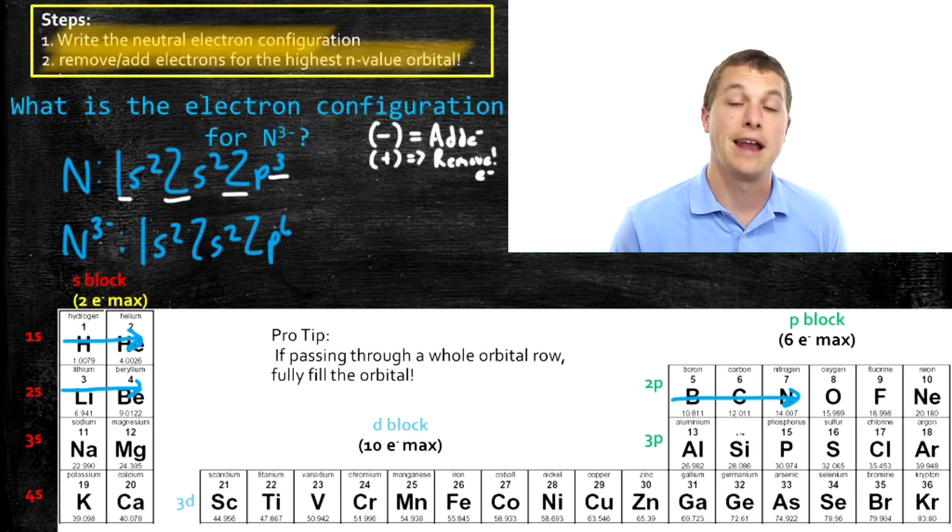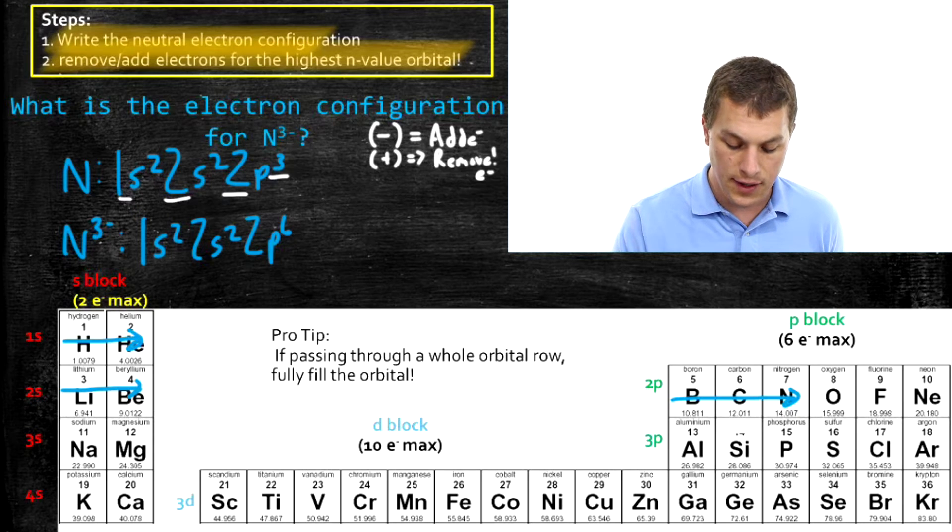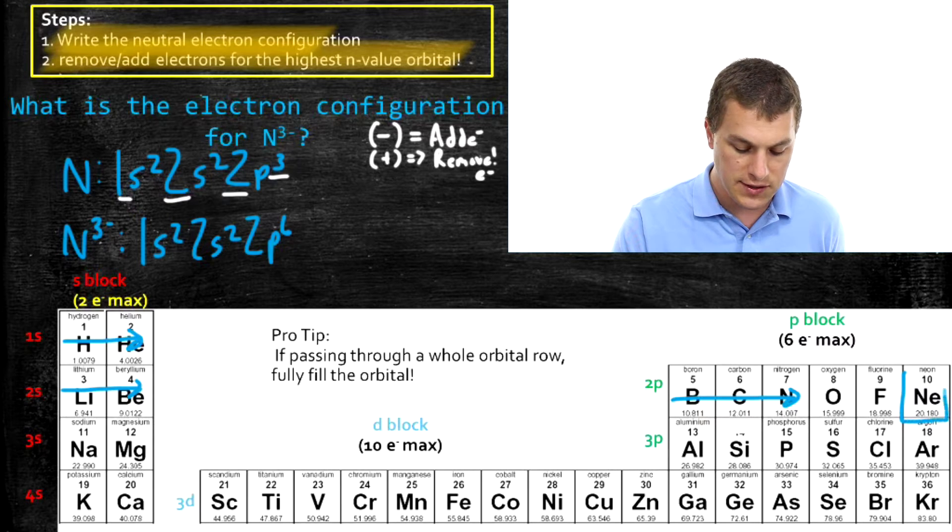All we've done is added three electrons because the nitrogen ion has three extra electrons. Notice that that gets us to the same electron configuration as neon.